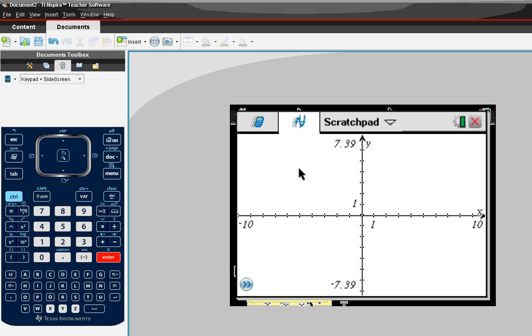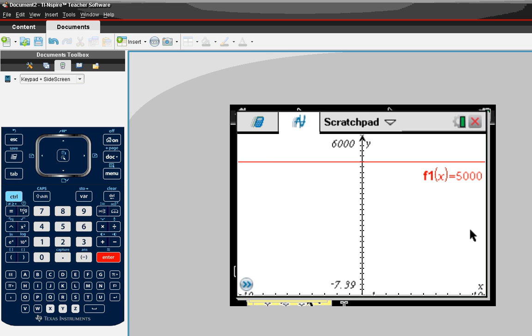Again, we're not going to see it on the screen because our window scale is not quite right. So we're going to double click on that y value. We know the ending y value is 5,000, so I'm going to pick a number bigger than that. And then I can see my graph here.